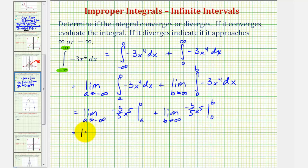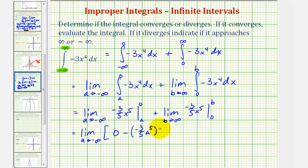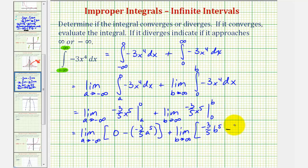We'll have the limit as a approaches negative infinity. Substituting zero gives zero, minus negative three-fifths a to the fifth. Plus the limit as b approaches infinity: substituting b gives negative three-fifths b to the fifth, minus zero when x is zero.